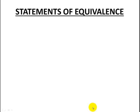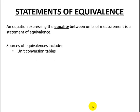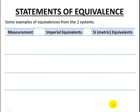We now need to look at statements of equivalences — equations that express the equality between different units of measurement. We have lots of different sources: our unit conversion tables that come with tests, our metric or SI system table of prefixes, problem statements, your calculator, reference books, and the internet. Let's take a look at some examples of equivalences from our two systems.